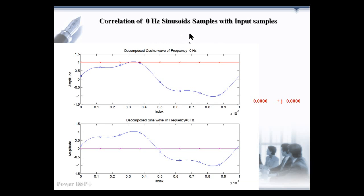In this graph, the input signal and its 8 samples are shown. 0 Hz cosine wave is shown in the upper diagram and 0 Hz sine wave is shown in the below diagram. We have to correlate the 0 Hz sine wave and cosine to the input signal to find out any DC component is present in the input.